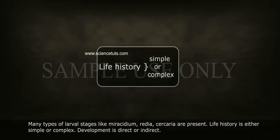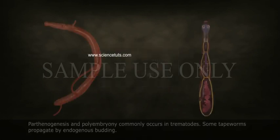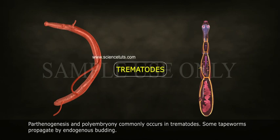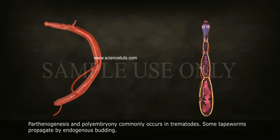Life history is either simple or complex, and development is direct or indirect. Parthenogenesis and polyembryony commonly occur in trematodes. Some tapeworms propagate by endogenous budding.